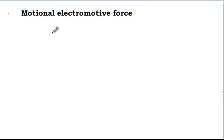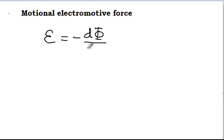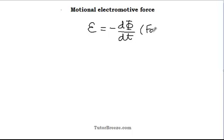Faraday's law explored the connection between electricity and magnetism. Faraday's law states that a changing magnetic flux through a circuit produces an induced EMF and hence current. Faraday's law is given by the induced EMF E equals minus dΦ/dt, where dt is the time interval over which the change in flux is dΦ. Lenz's rule explains the direction of the induced current — the negative sign is explained by Lenz's rule.